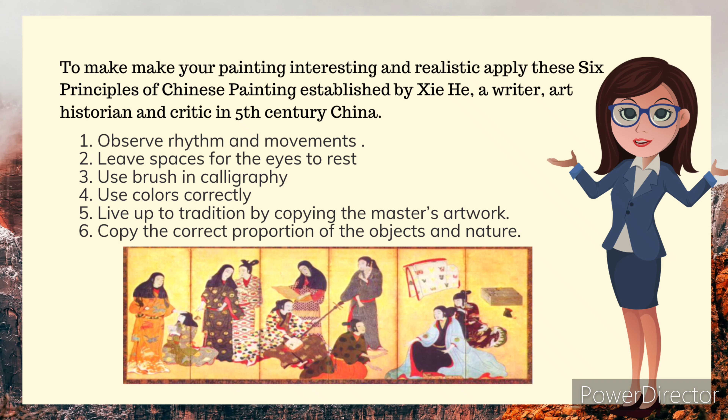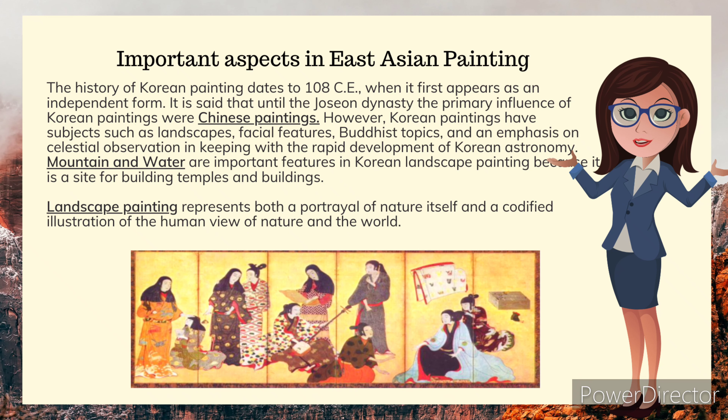The history of Korean painting dates to 108 CE when it first appears as an independent form. Until the Joseon dynasty, the primary influence on Korean paintings was Chinese painting. However, Korean paintings have subjects such as landscapes, facial features, Buddhist topics, and an emphasis on celestial observation in keeping with the rapid development of Korean astronomy. Mountain and water are important features in Korean landscape painting because these are sites for building temples and buildings. Landscape painting represents both a portrayal of nature itself and a codified illustration of the human view of nature and the world.